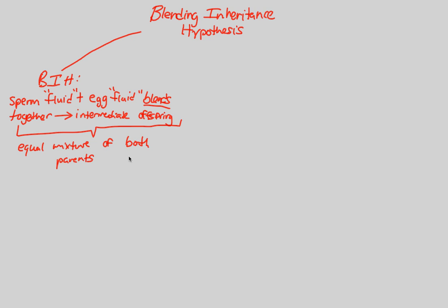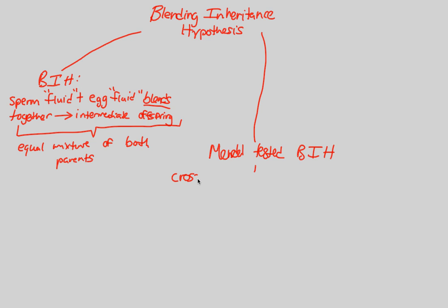Mendel decided to test this hypothesis. What he did — and this is where we'll look at true breeding one more time — is very simple. He crossed a true breeding line of plants with contrasting traits.